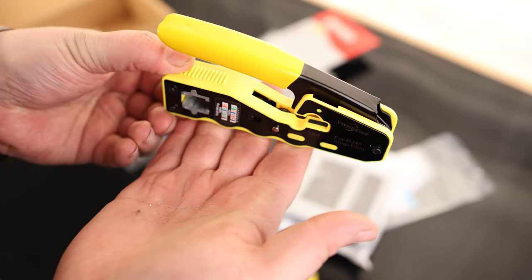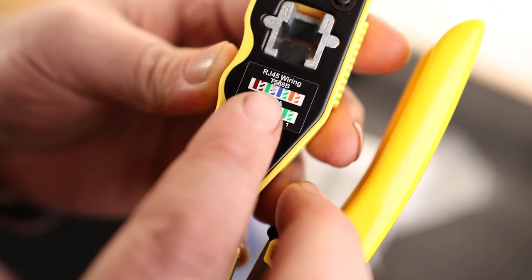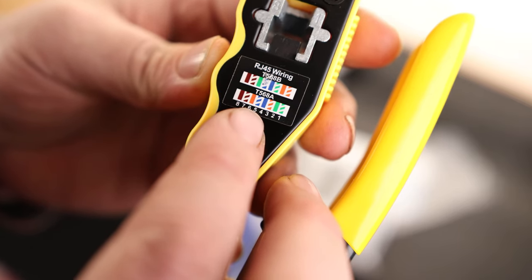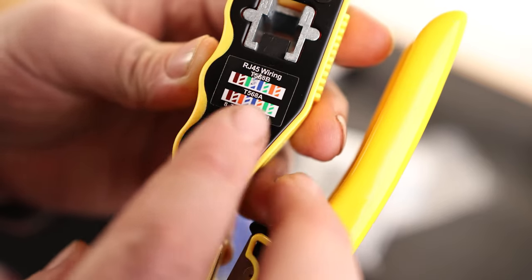So this is a nice size, and I do like they've got this kind of cut out to fit our fingers. And they've got it marked with the color code, so we've got our B and our A. Most of the time, I do the B, which is orange-white-orange, green-white-blue, blue-white-green, brown-white-brown. So that is labeled correctly.